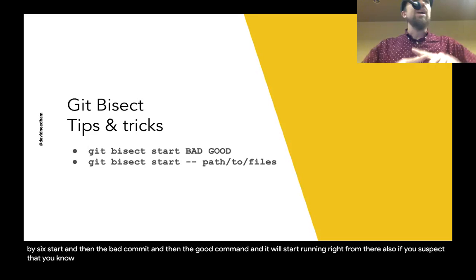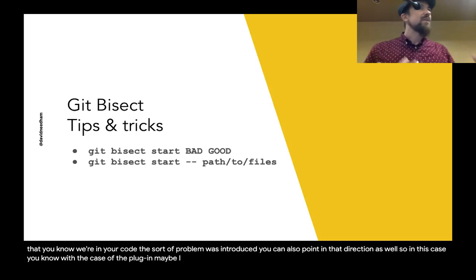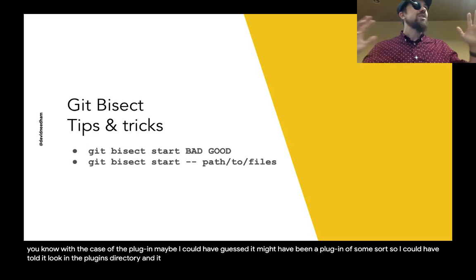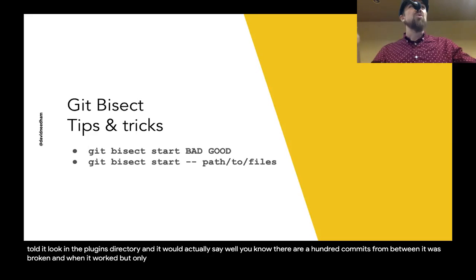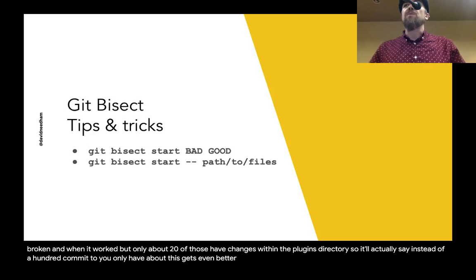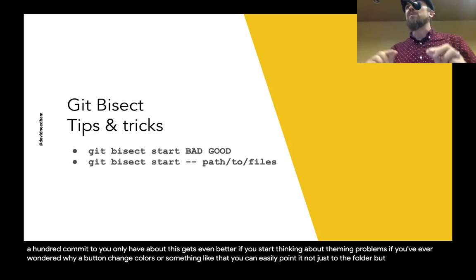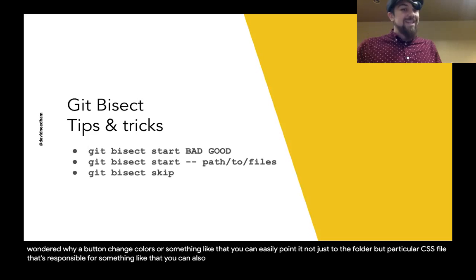Also, if you suspect where in your code the problem is introduced, you can point it in that direction. In the case of the plugin, maybe I could have guessed it might have been a plugin of some sort, so I could have told it to look in the plugins directory. It would say there are 100 commits between when it was broken and when it worked, but only about 20 of those have changes within the plugins directory — so instead of 100 commits, you only have about 20 to sort through. This gets even better for theming problems: you can point it not just to the folder but to the particular CSS file responsible.